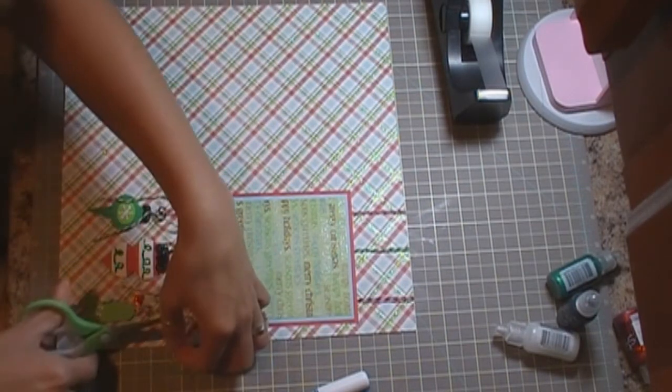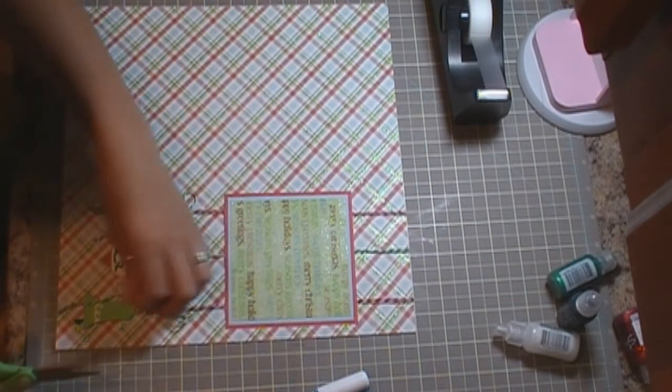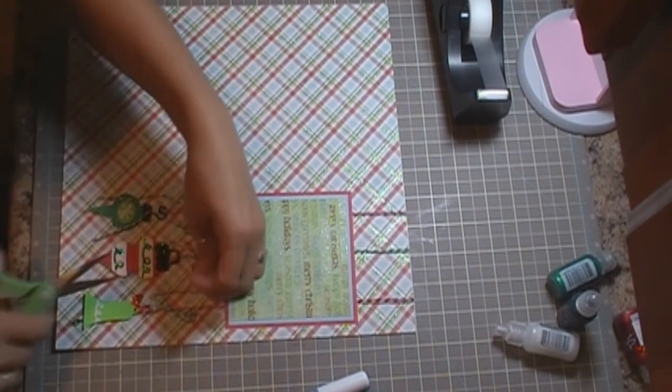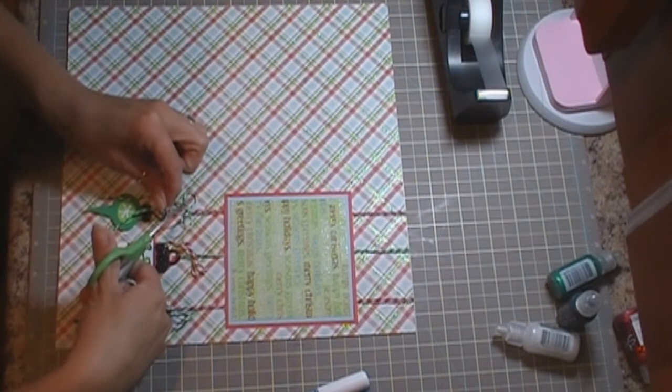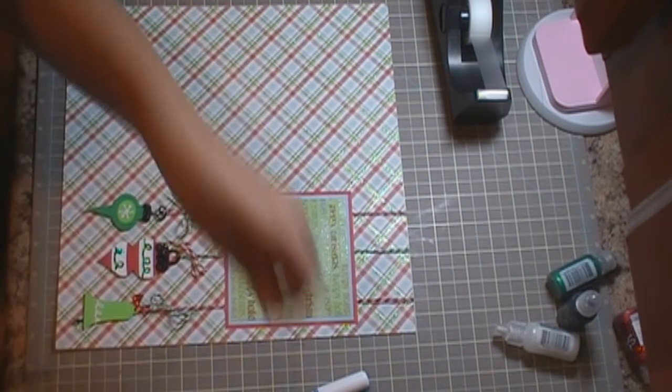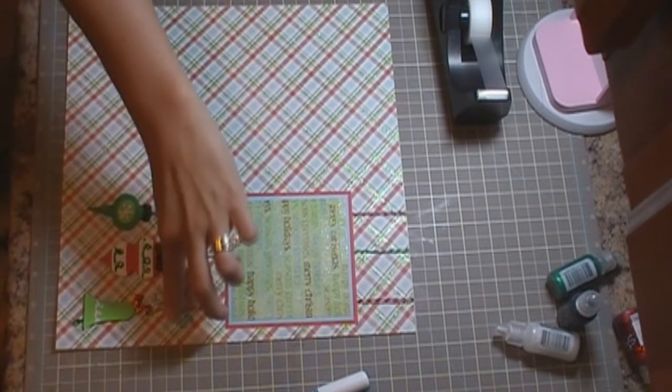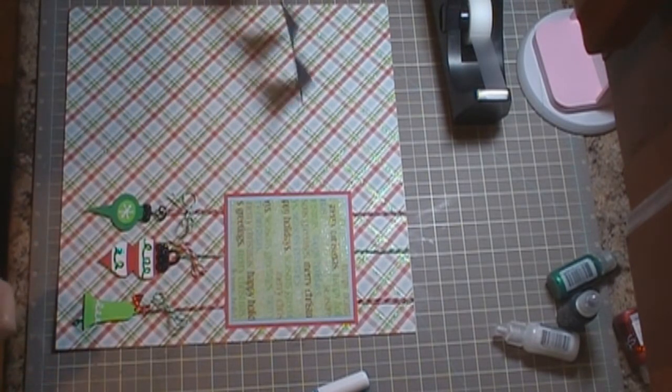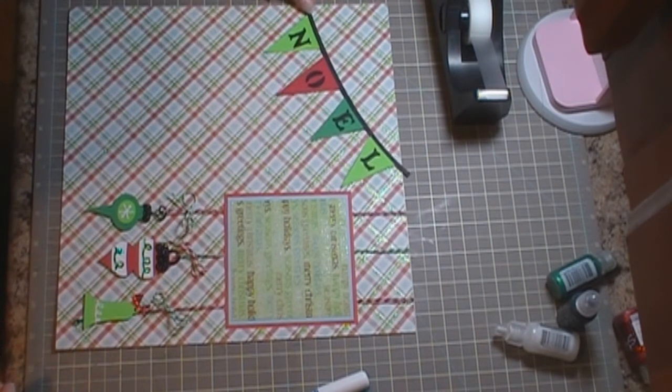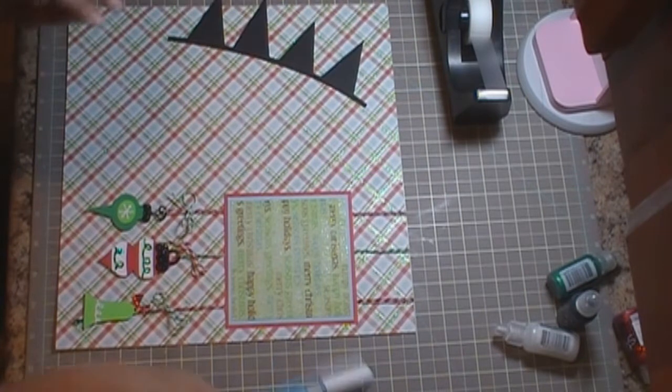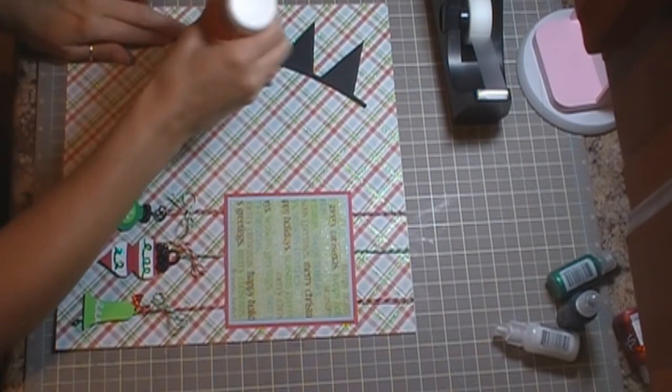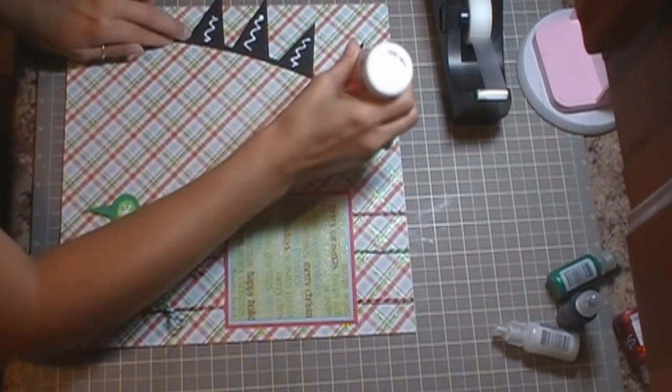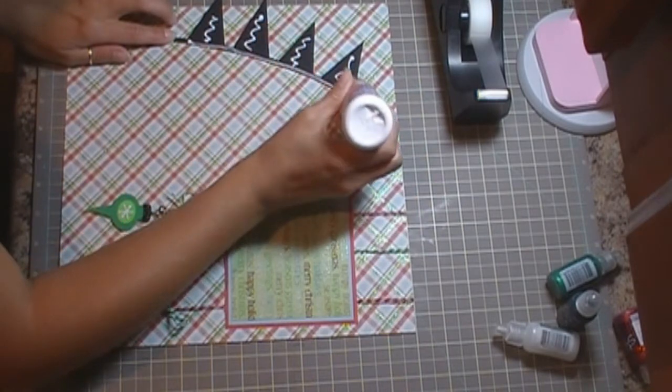And then we're going to trim our ends to our twine. Just like that. And then we'll get our other piece on there. And that's going to probably go directly on my layout. So I'm going to use Scotch Quick Dry. Just like that.